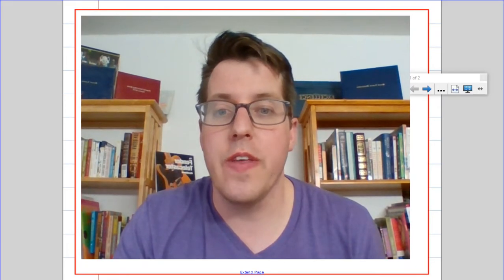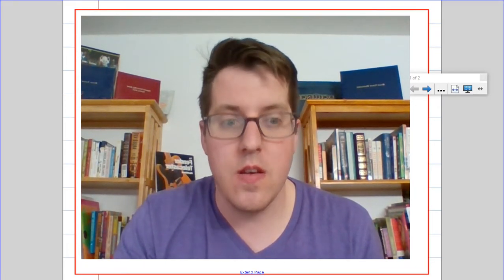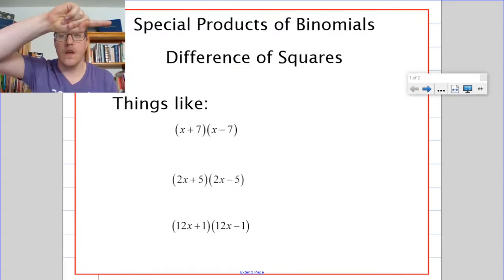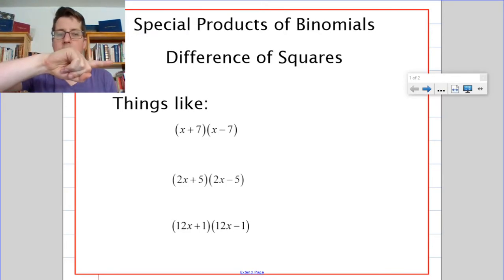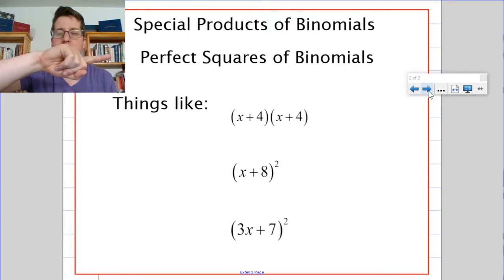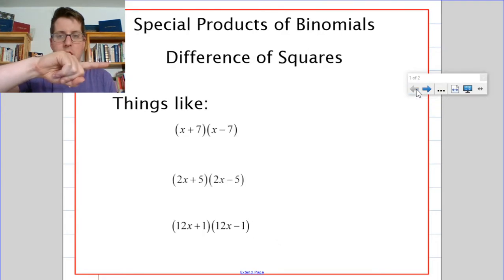These are what are called special products of binomials. When it comes to special products of binomials, there are going to be two that we think of: one that's called a difference of squares, and one that is called the perfect square of a binomial. Those are the only two things we have to master today.